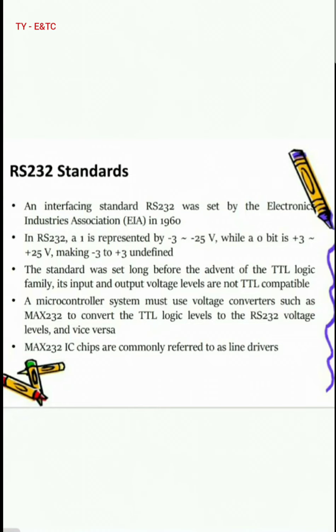In RS-232, logic 1 is represented by minus 3 to minus 25 volts, while logic 0 is represented as plus 3 to plus 25 volts. These voltage levels define the standard for communication.